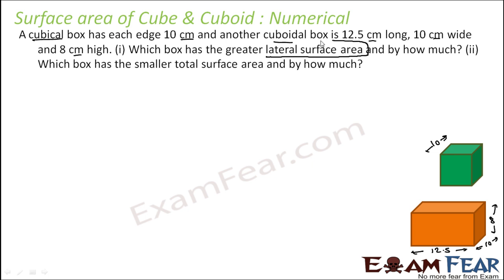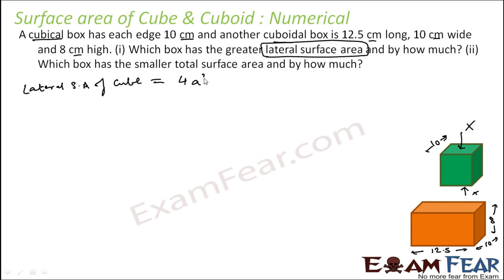Which box has better lateral surface area? It's pretty easy — we just have to find the lateral surface area of both the cubical and cuboidal box. When we talk about the lateral surface area, we ignore the top and the bottom; we just take care of four sides. So the lateral surface area of the cube will be 4a squared. Because each side is a square and there are four lateral sides. So 4a squared is the lateral surface area of the cube. The total surface area of the cube is 6a squared. Putting the values: 4 into 10 into 10 = 400 centimeter square. That is the lateral surface area of the cube.